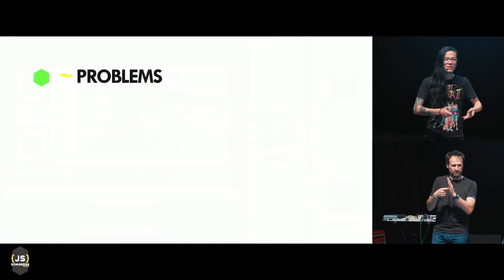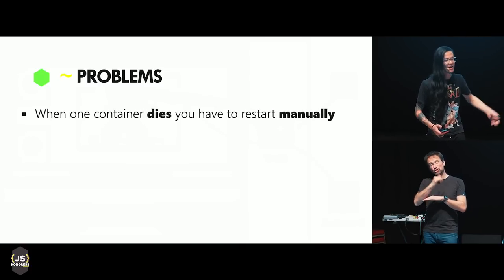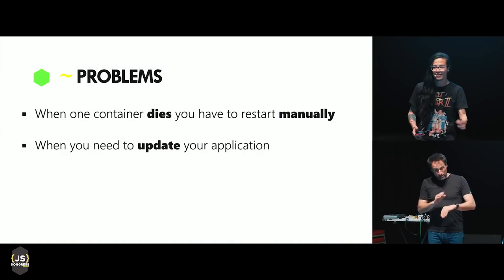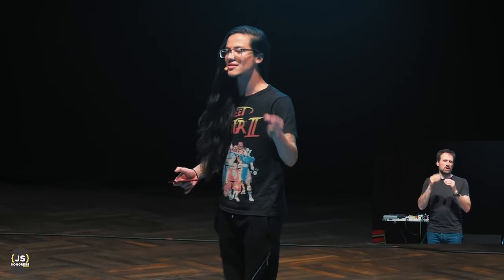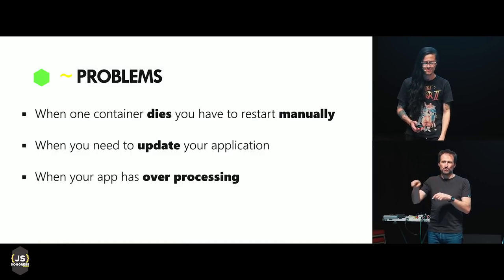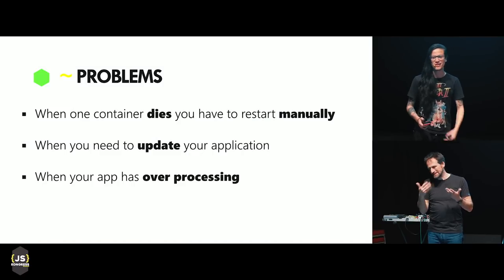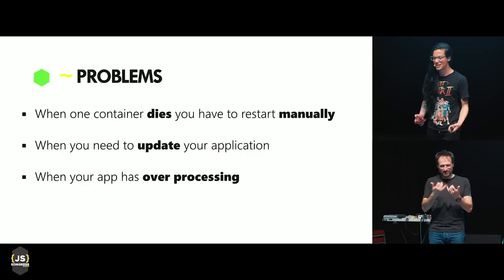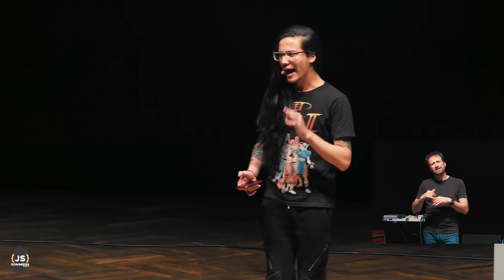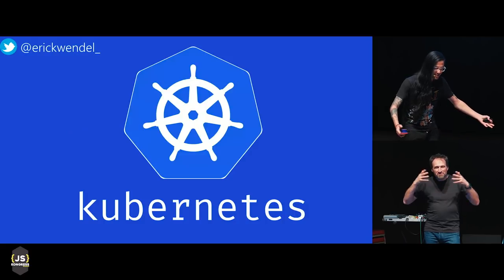Working only with Docker with nothing to manage it, if something happens we have to restart and update manually. When we update, the downtime is smaller than a traditional FTP approach, but I still have to stop my Docker and start other instances — and during that brief time customers will be denied access. If you have over-processing, it's really hard to manage. We need more to manage our containers. Let me present to you Kubernetes.